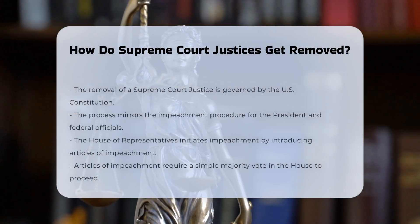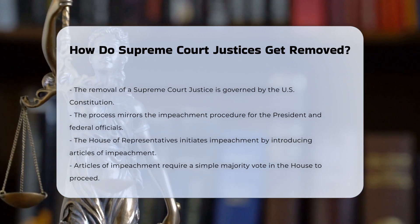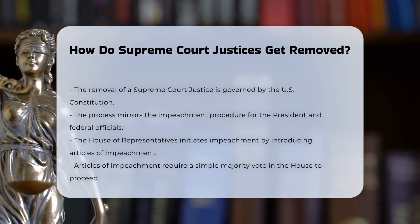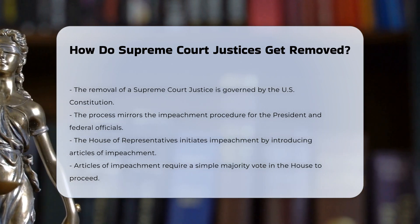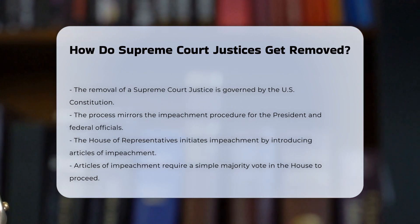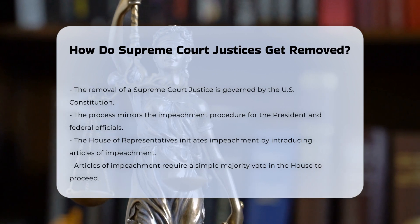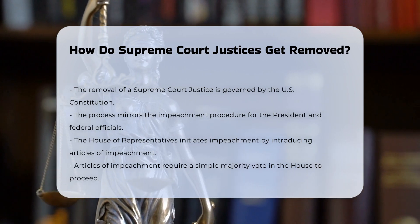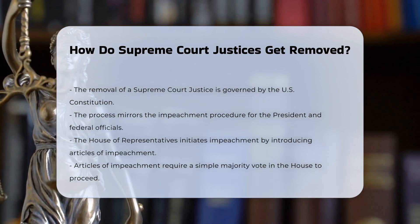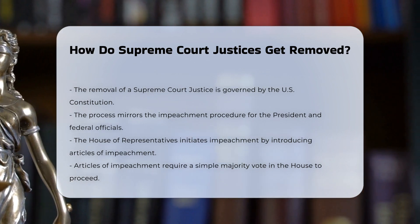The process of removing a Supreme Court justice is governed by the U.S. Constitution and is similar to the impeachment process for the president and other federal officials. The House of Representatives initiates the impeachment process by introducing articles of impeachment. These articles must be approved by a simple majority vote in the House. Once the articles are approved, the case is sent to the Senate for a trial, which requires a two-thirds majority vote for conviction and removal from office.